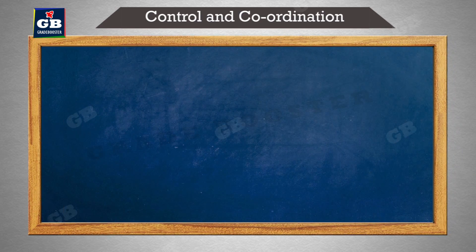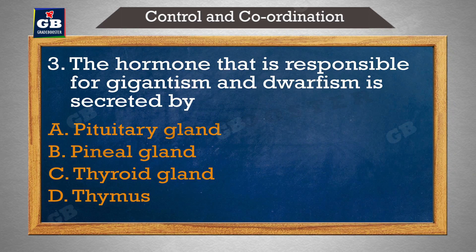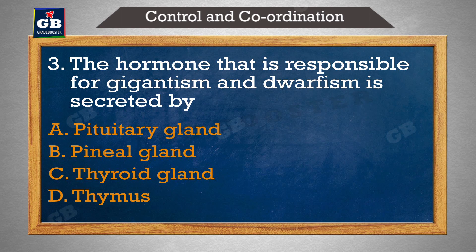The hormone that is responsible for gigantism and dwarfism is secreted by which gland — hormone jo gigantism aur dwarfism ke liye responsible hai, is gland se secret hota hai: a) pituitary gland, b) pineal gland, c) thyroid gland, d) thymus.